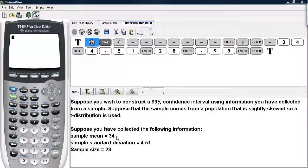The sample mean we've collected to be 34, the sample standard deviation we computed to be 4.51, and the sample size is 28. Now how can we construct a 99% confidence interval for the population average using this information in a t-distribution?